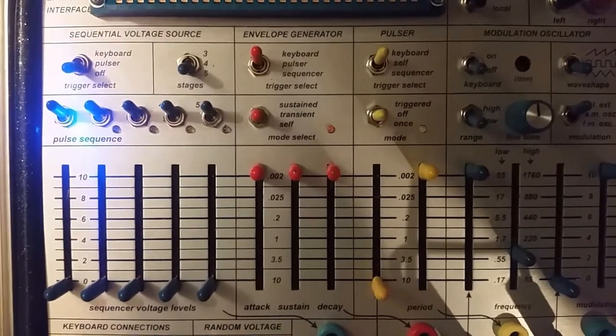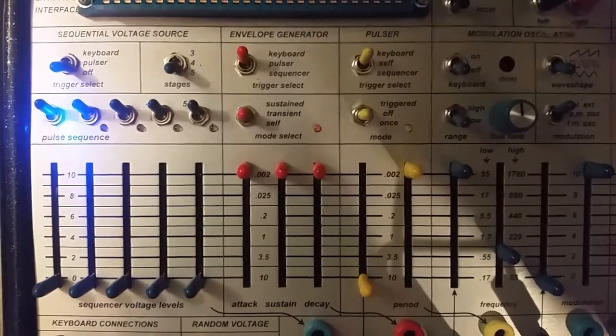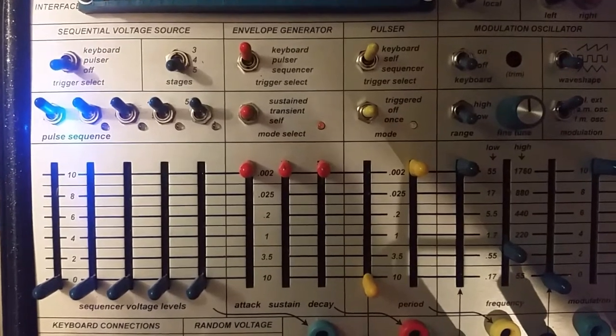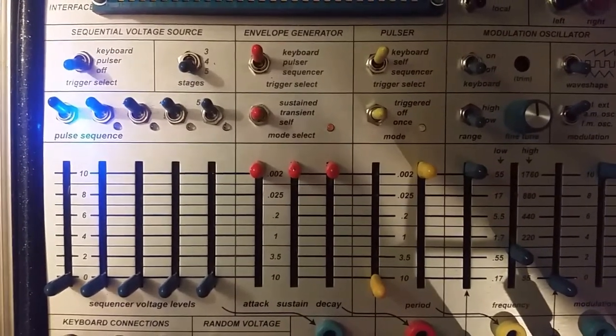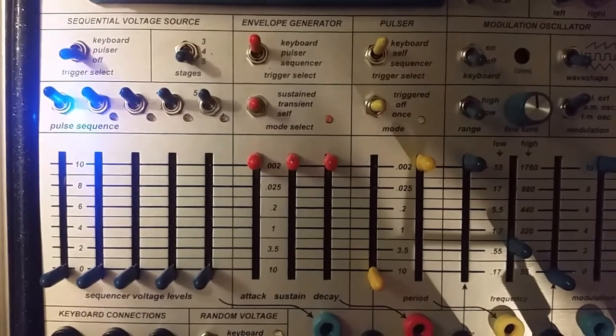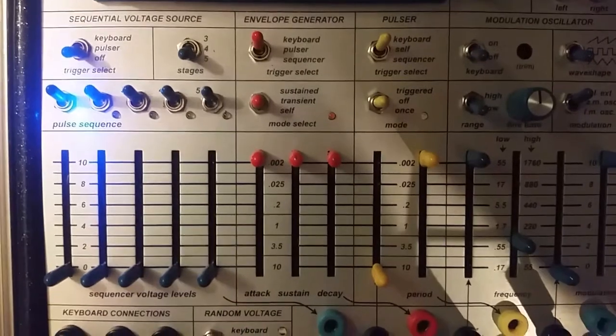This is a follow-up video to my previous video regarding the quirkiness of the Buchla Music Easel's Pulsar. I mentioned in that video that I would post a future video going over some of the details of the envelope generator and how it had some similar functionality in trying to get it to self-cycle.